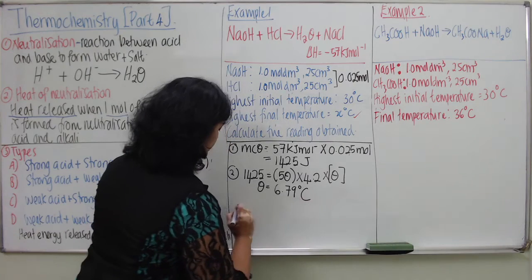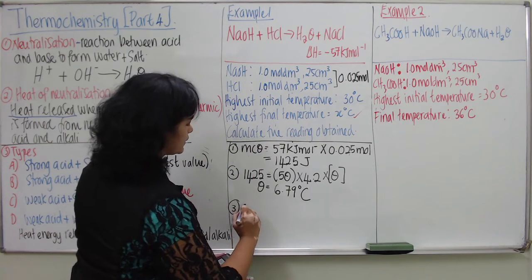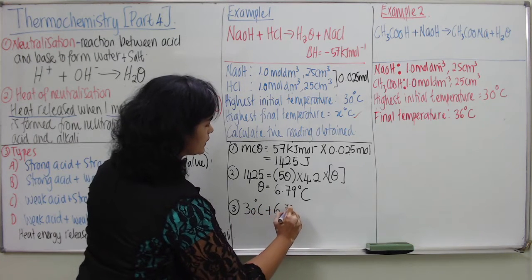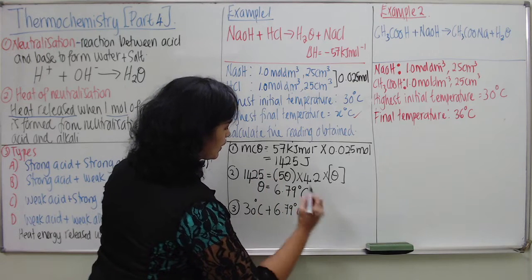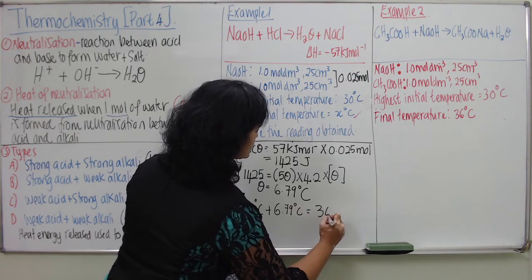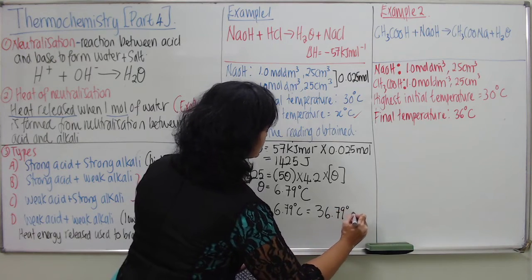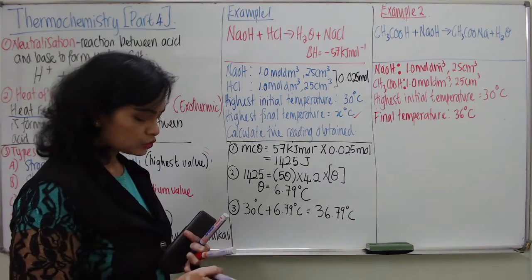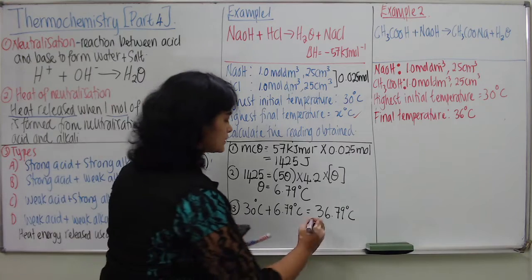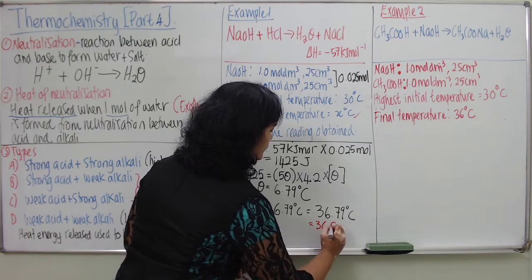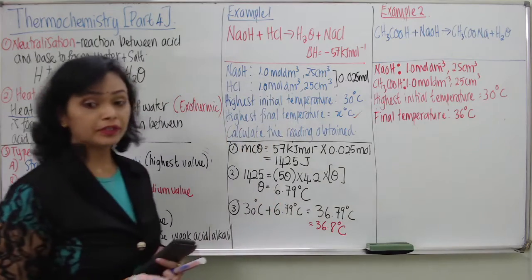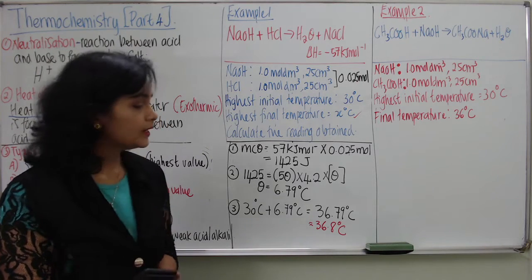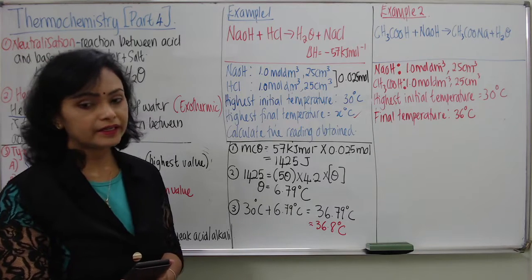Step 3: the reading obtained is 30°C added with 6.79°C, which gives a final reading of 36.79°C. Since a thermometer always reads to one decimal place, students round this to 36.8°C. This shows that the final reading your thermometer is going to show is 36.8°C.